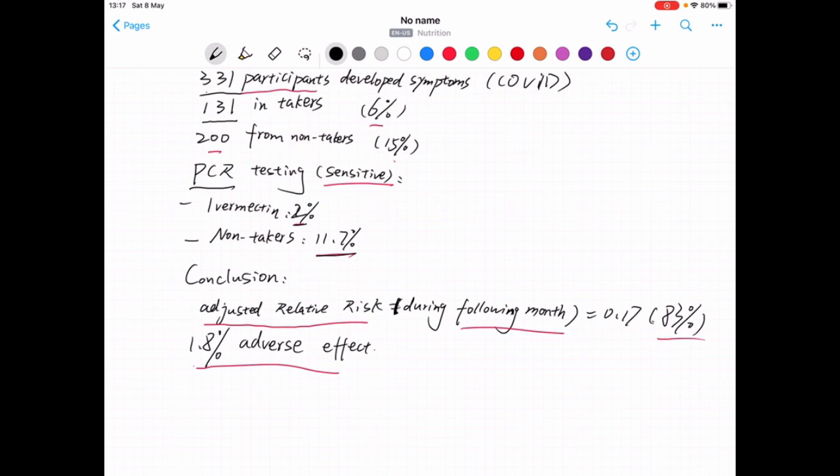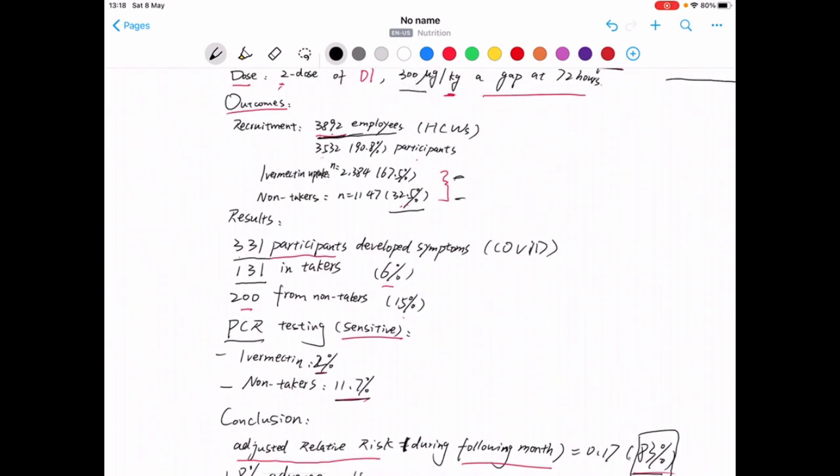the adjusted relative risk during the following months after taking oral Ivermectin, the subjects are able to lower the risk of getting infected by COVID-19 by, amazingly, 83%. And in terms of adverse effects, 1.8% were present in the whole cohort.